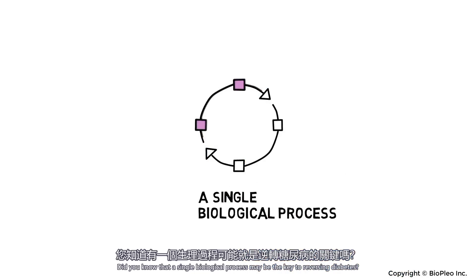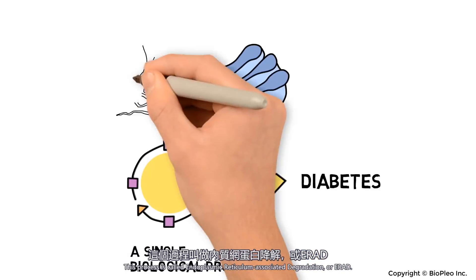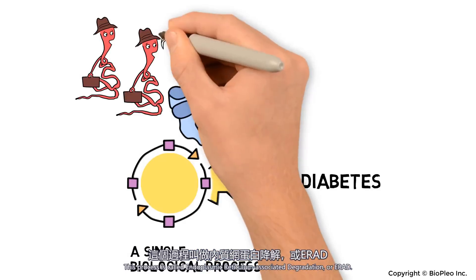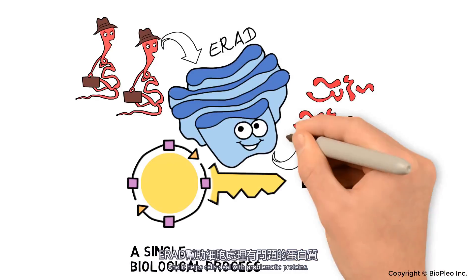Did you know that a single biological process may be the key to reversing diabetes? This process is called endoplasmic reticulum-associated degradation, or ERAD, and it helps cells deal with problematic proteins.